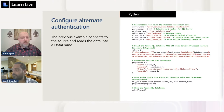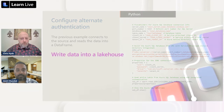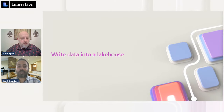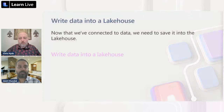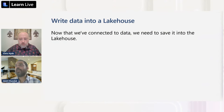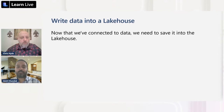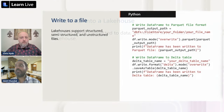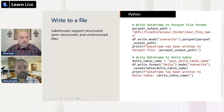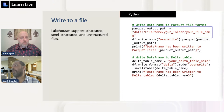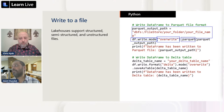Now let's look at how to write the data into the data lake. Once you're connected and have loaded data into a dataframe, you need to save it. You have multiple format options. Here's an example: `df.write.mode('overwrite').parquet(parquet_output_path)` - overwrite mode means we overwrite what's already written, parquet specifies the format, and the parquet output path is the full path where we write the file. A print statement then confirms the file has been written.